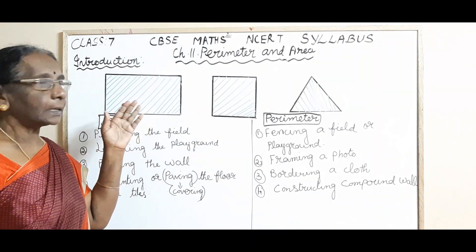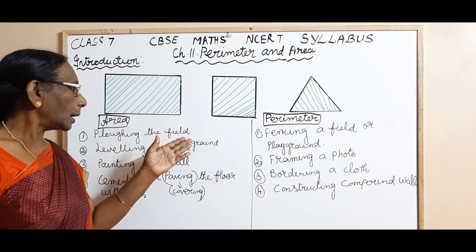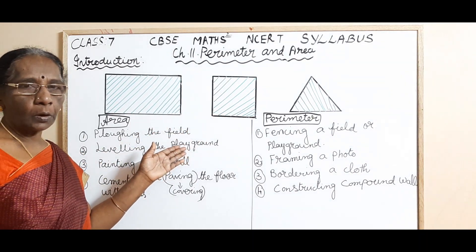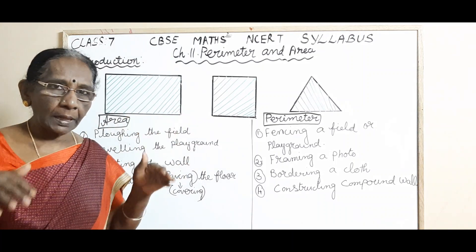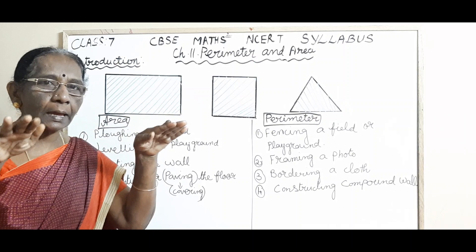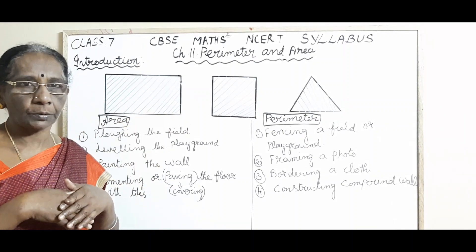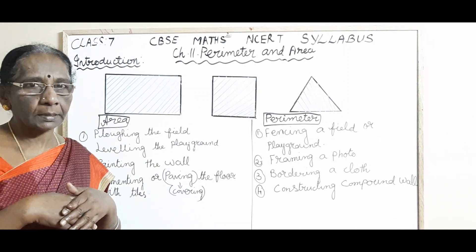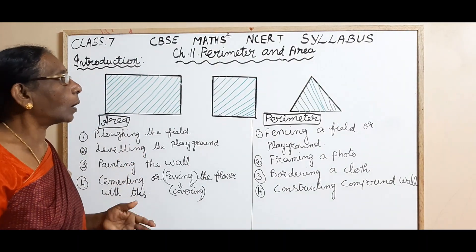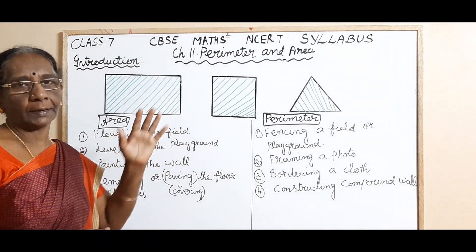And now, let us imagine this square represents a playground. So, to make a playground, the first step is what? You have to level the playground. You have to clean the playground. So, for levelling, which portion of this playground is levelled?